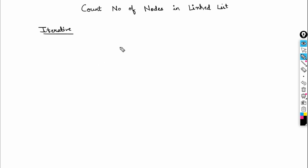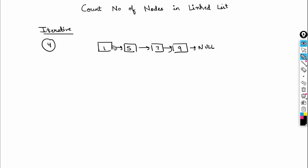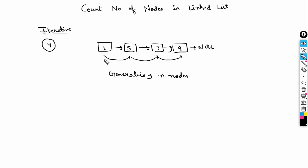Now let's discuss the time complexity. We are iterating over the whole list, going over each and every node. To generalize, if the list has n nodes, we are visiting n nodes. So the time complexity for the iterative solution is O(n).